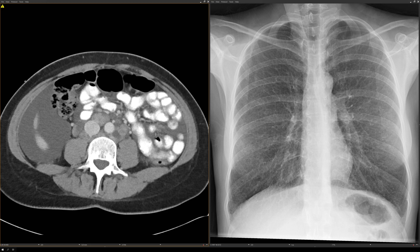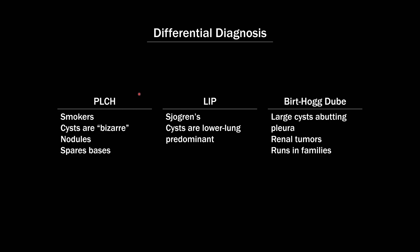Let's quickly talk about the differential diagnosis. For new cystic lung disease, the top three are: pulmonary Langerhans cell histiocytosis (PLCH), lymphocytic interstitial pneumonia (LIP), and Birt-Hogg-Dubé. For PLCH, these are usually smokers; the cysts have a bizarre shape rather than uniform round cysts as in LAM; nodules become cysts; and it spares the bases — PLCH is typically upper lung predominant, whereas LAM has no apical-basilar gradient.